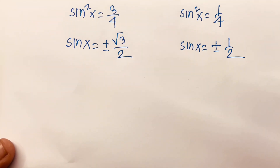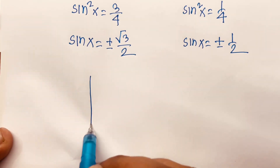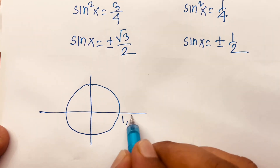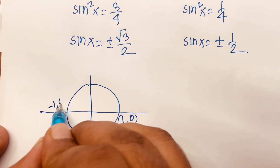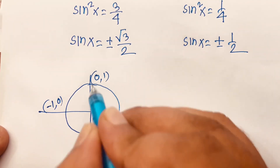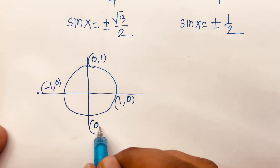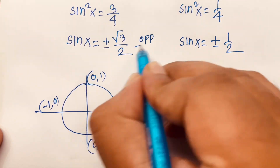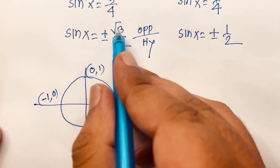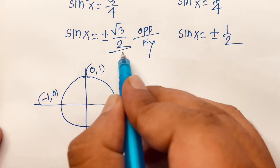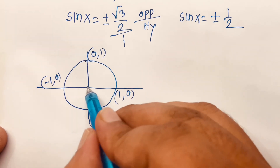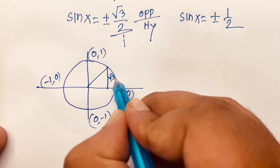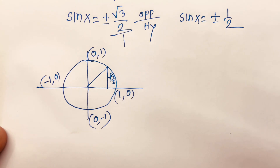Now we will find the value of x. So this is y, this is x, and this is the unit circle, with points 1,0 and minus 1,0, and 0,1 and 0 minus 1. We know that sine x is opposite over hypotenuse, so the opposite is square root 3 over 2 and hypotenuse is 1. This opposite value is square root 3 over 2, giving an angle of 60 degrees.